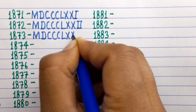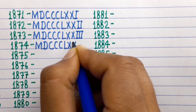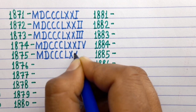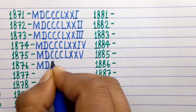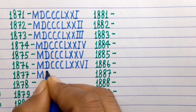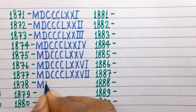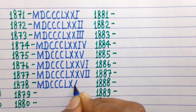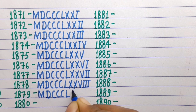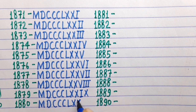1873 MDCCCLXXIII, 1874 MDCCCLXXIV, 1875 MDCCCLXXV, 1876 MDCCCLXXVI, 1877 MDCCCLXXVII, 1878 MDCCCLXXVIII, 1879 MDCCCLXXIX, 1880 MDCCCLXXX.